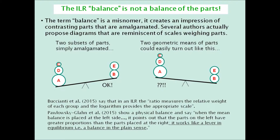Butchianti and co-authors say, and I quote, that in an ILR 'the ratio measures the relative weight of each group and the logarithm provides the appropriate scale.' Pawlowsky-Glahn and co-authors show a physical balance and say, and I quote: 'When the mean balance is placed at the left side, it points out that the parts on the left have greater proportions than the parts at the right. It works like a lever in equilibrium — that is, a balance in the plain sense.'